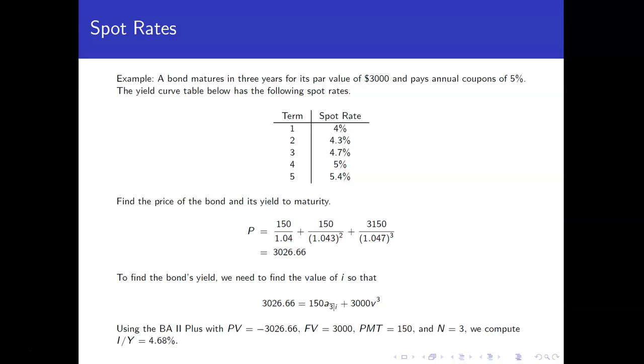This problem also asks us now to find the yield to maturity of this bond. Basically the constant annual effective rate that the bond would be yielding over the three-year term. We do this just like what we did back when we did yield rates for bonds.